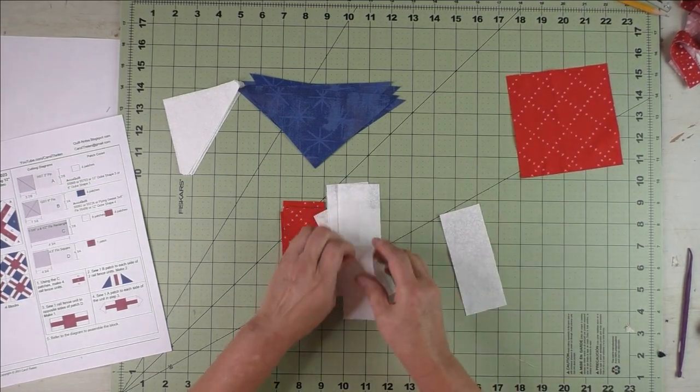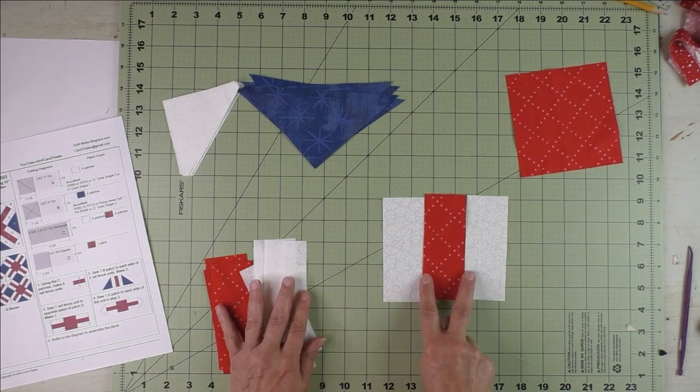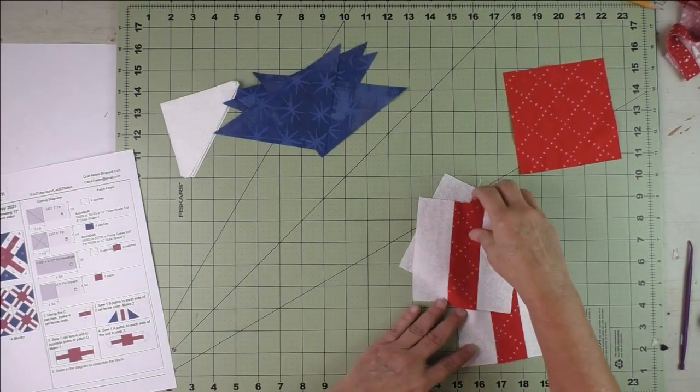To piece these, we're going to piece them like this. We'll piece four like this—the rail fence units are finished.